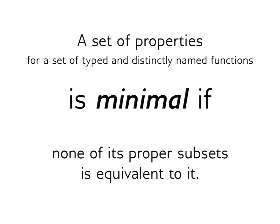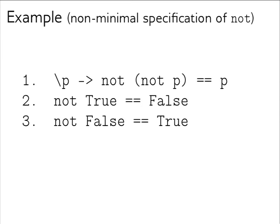Example of a non-minimal specification of `not`. The last property is implied by the two first properties, so we can remove property three and still have the same specification. This is a non-minimal specification because we have a redundant property — properties one and two completely specify `not`.